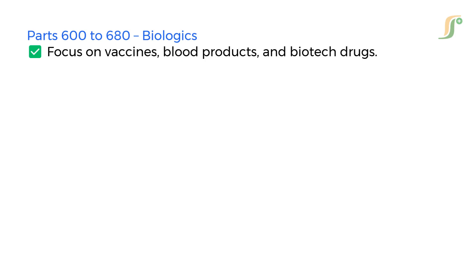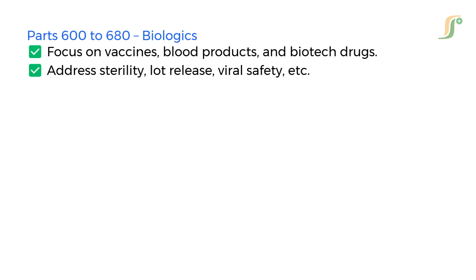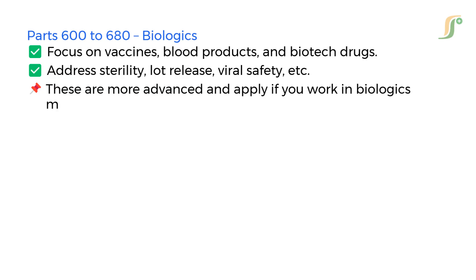Parts 600 to 680 focus on Biologics — vaccines, blood products, and biotech drugs. They address sterility, lot release, viral safety, and more. These are more advanced and apply if you work in biologics manufacturing.